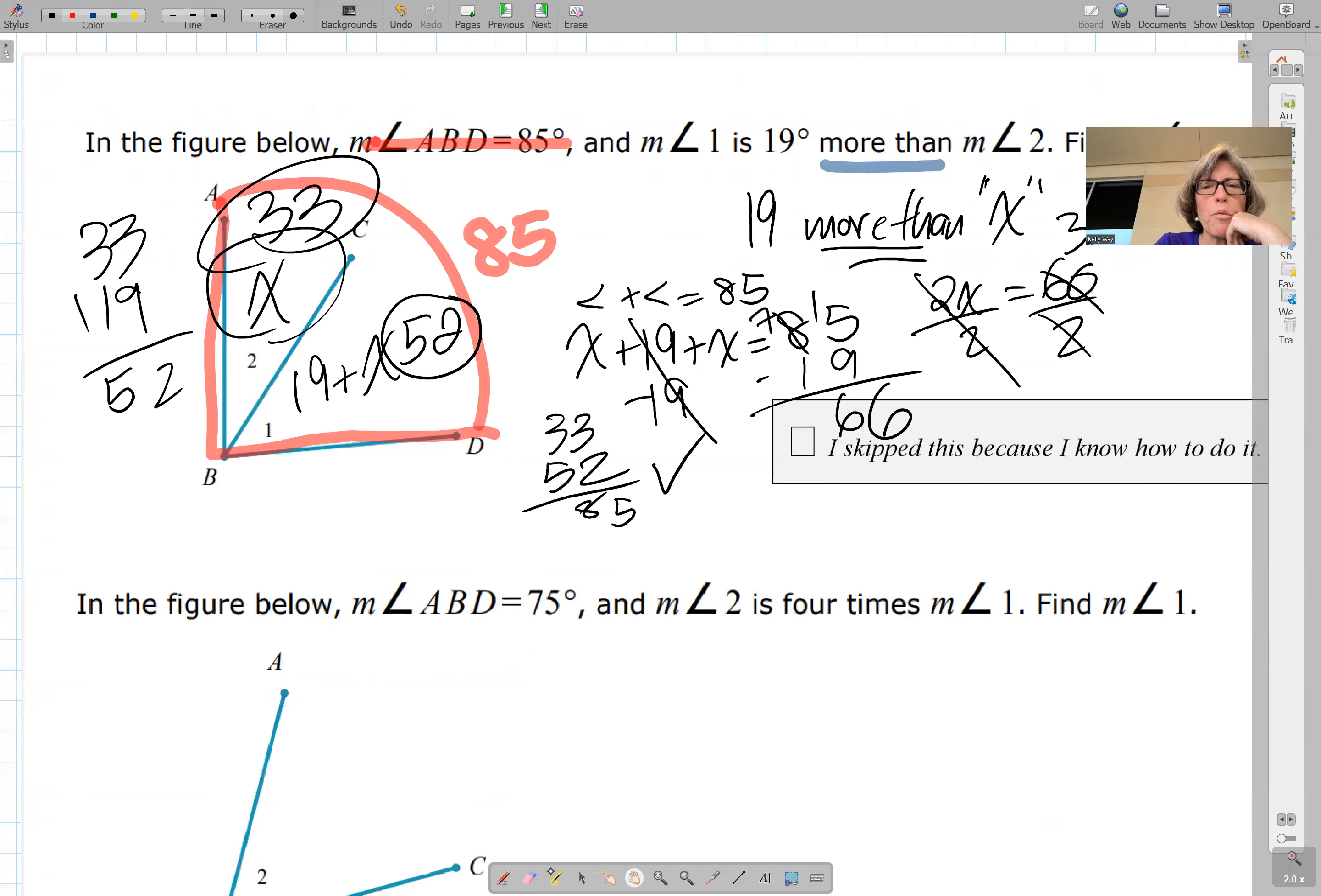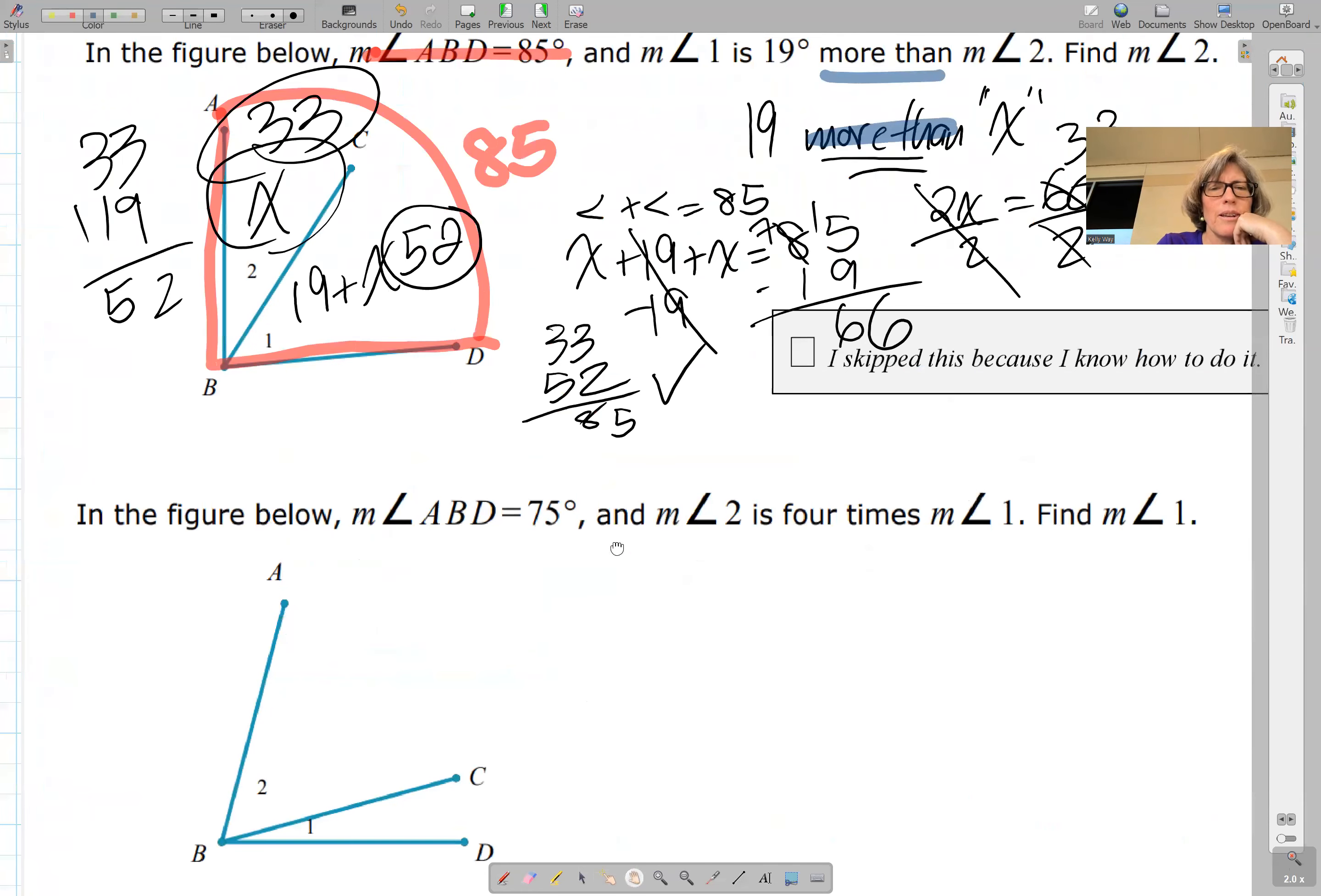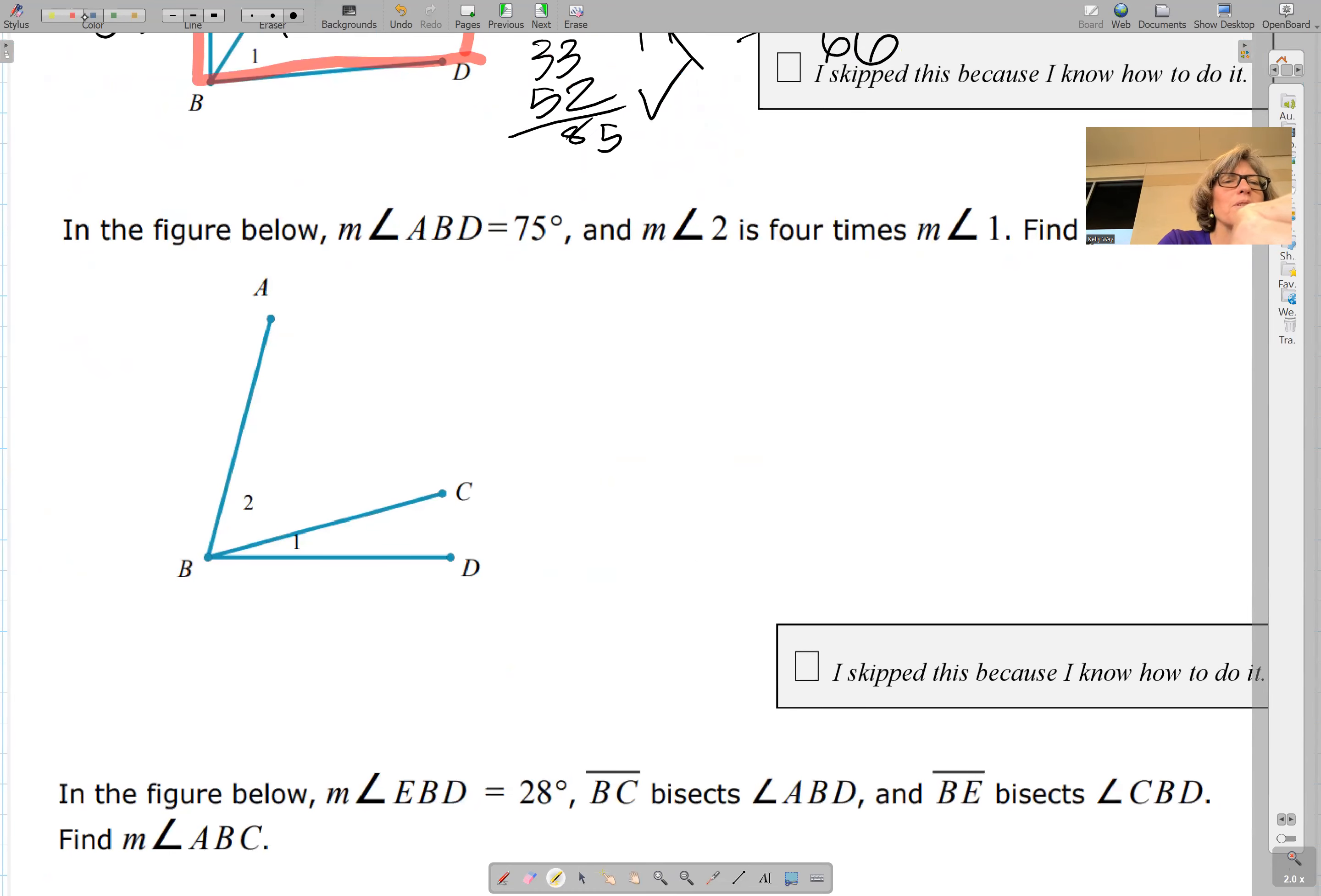So key concept here: the concept of more than is addition, not multiplication. Here's another one. ABD is 75. Angle 2 is 4 times measure. When you compare one thing to the other, the other is x. So angle 1 is x. 4 times is simply 4x.